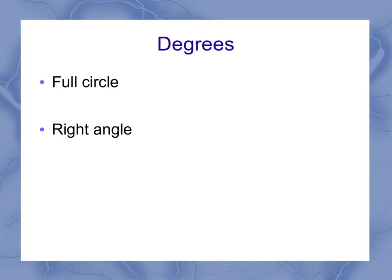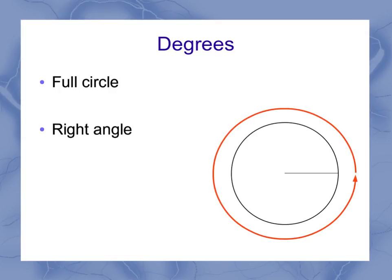For degrees, we've got a couple of special measurements we want to make sure we have here, which is if I go all the way around a circle, that's going to be 360 degrees. And what I call a right angle is 90 degrees. That's a quarter of the way around the circle.